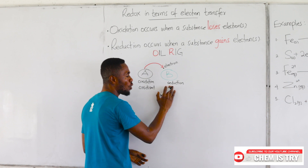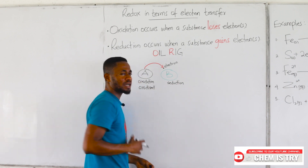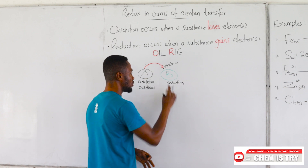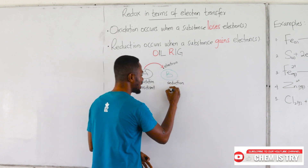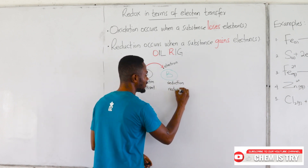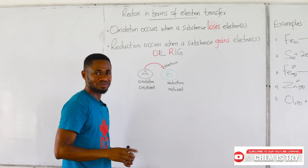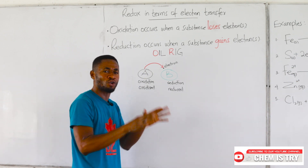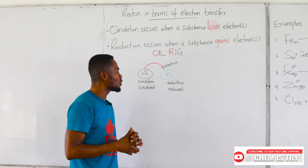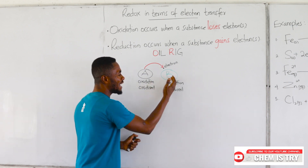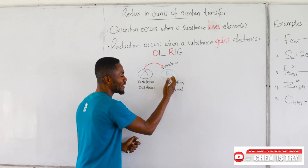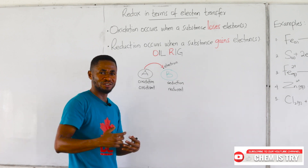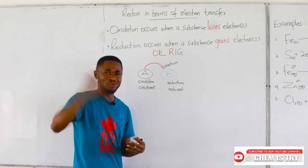Substance B on the other hand is gaining electrons, so it is undergoing reduction — reduction is gain of electrons. We can say B is reduced. Now this is a little bit confusing, because gaining electrons makes you think you increase, not reduce.